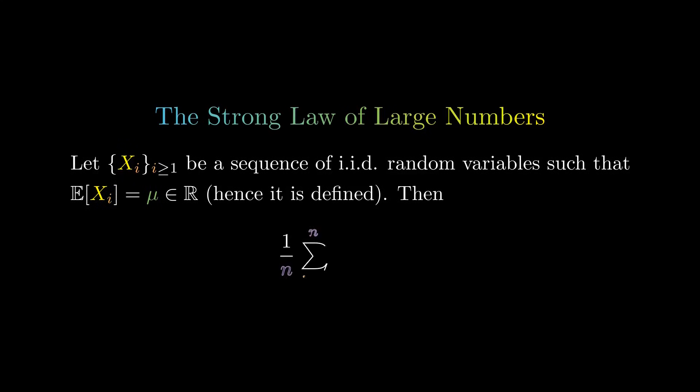We will also need the strong law of large numbers, which states that if you choose a sequence of independent and identically distributed random variables with defined expected value mu, then the sample mean converges to mu almost surely with N.